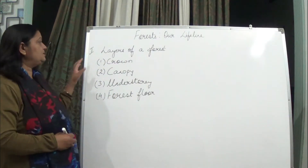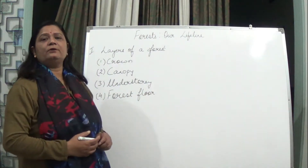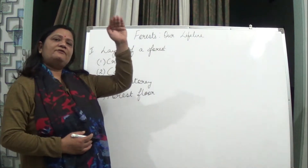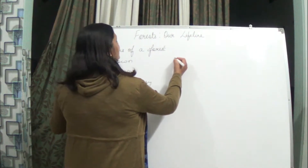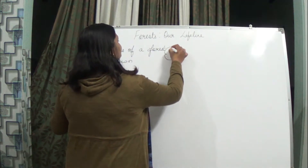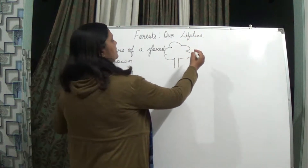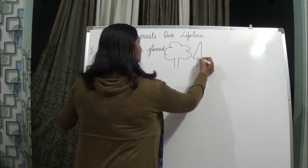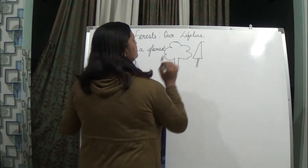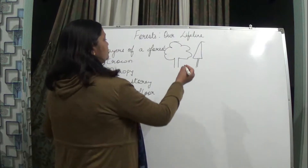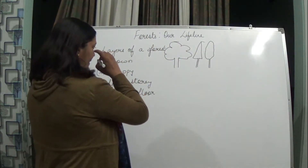The first layer of the forest is the crown layer. The crown is what any big tree or small tree forms on the surface — the roof. The shape of the crown depends on the tree. It is present on the surface of the total stem and forms the crown. It is of different shapes; its shape is not fixed.